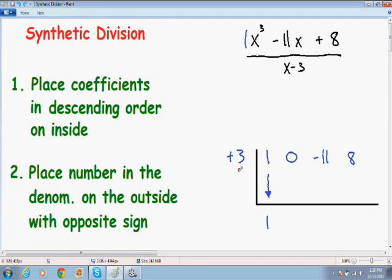So our next step is that we want to multiply this 3 by the 1, and then we want to place it below the 0. So 3 times 1 is 3. So we want to place a 3 below the 0.